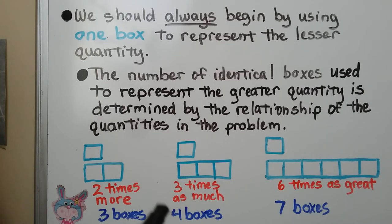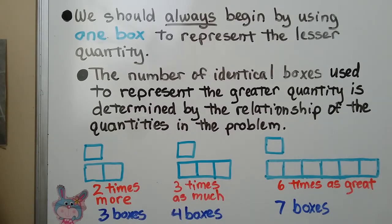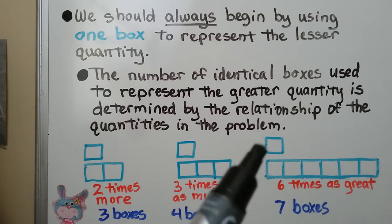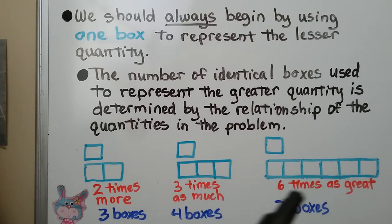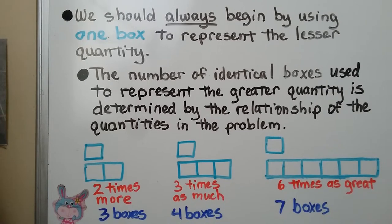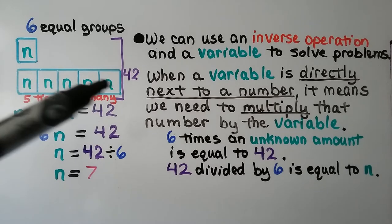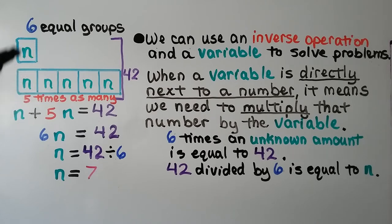If it says three times as much, we draw one box for the lesser quantity and three boxes for the three times as much, which is four boxes in all. If it says six times as great, then we draw one box for the lesser quantity, then six boxes for six times as great — that's seven boxes in all. Here our bar model shows one box for the lesser amount, and then five times as many, so there are five boxes drawn here — that's six equal groups.